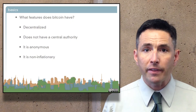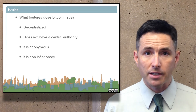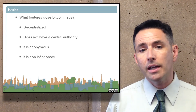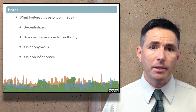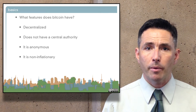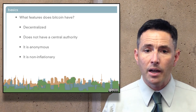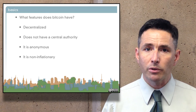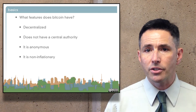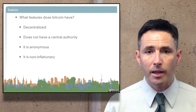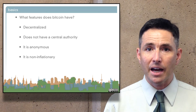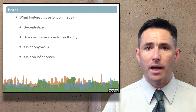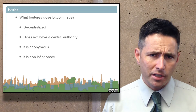Bitcoin has particular qualities that are really different from many currencies we've seen, even digital currencies from the past. For example, it's decentralized — meaning not only does it lack a central authority, but the computation associated with Bitcoin is distributed among all the people that participate in the network. There's no government or corporation responsible for running Bitcoin, no certifying authority. The work of doing Bitcoin is spread among all the people using it.